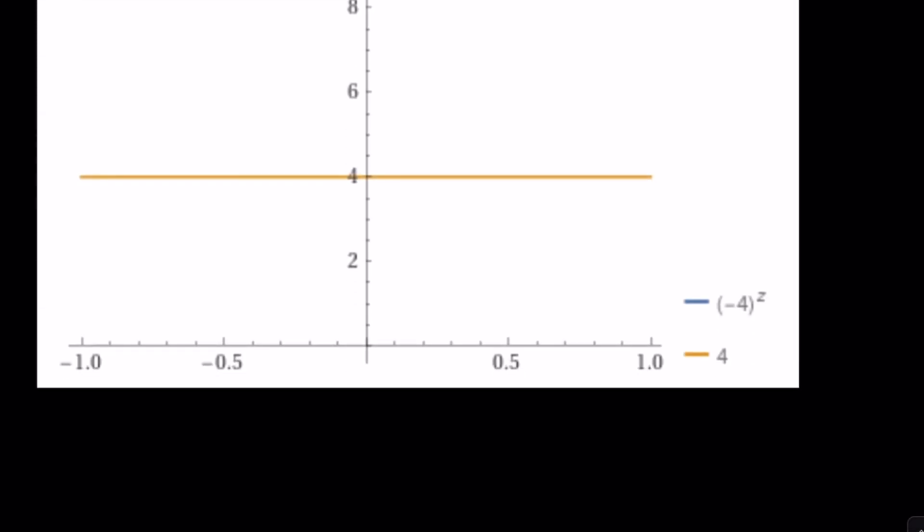Now before we start solving this problem, let's go ahead and take a look at the graph. If negative 4 to the power of Z is equal to, well there's no graph because you can't really graph it. When the base is negative, it's kind of a really weird story.